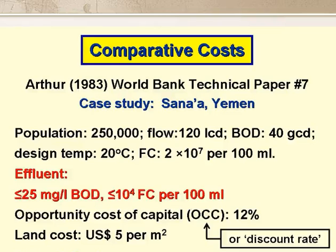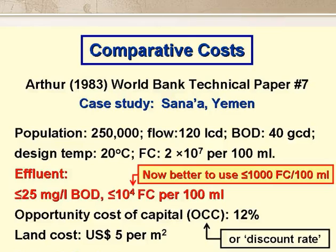The final effluent was to have no more than 25 mg per litre BOD, and below 10,000 faecal coliforms per 100 ml. Arthur used a discount rate, or opportunity cost of capital, of 12%, and a land price of 5 USD per square metre. If we were doing these calculations now rather than as Arthur did in the 1980s, we'd most likely use a final faecal coliform count of 1,000 per 100 ml, not 10,000 per 100 ml.